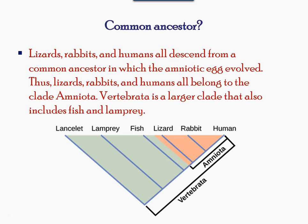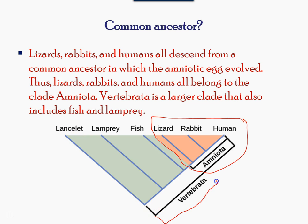Humans, rabbits, and lizards all share a common amniotic egg, and hence are grouped together. Vertebrae is a larger scale grouping that includes fish, lamprey, and lancelet.